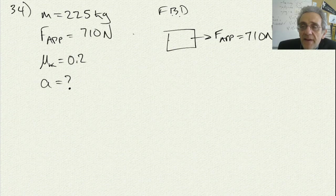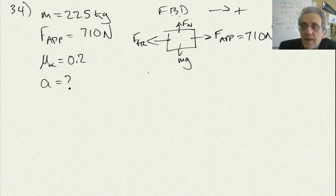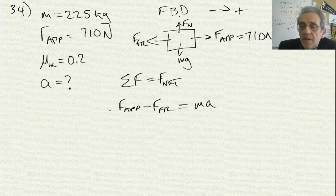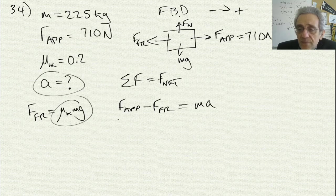The free body diagram has friction going to the left, opposite to the direction of motion. The normal force and gravity cancel each other out. Writing the summation of forces equals F net: applied force minus force of friction equals ma. I want to find a, so I'll substitute the friction equation μk · mg in for friction, giving: applied force minus μk · mg equals ma. Dividing by m to isolate a.